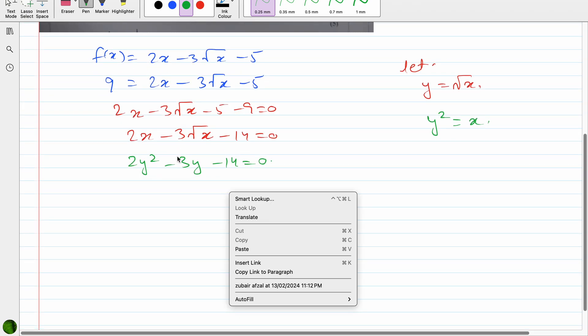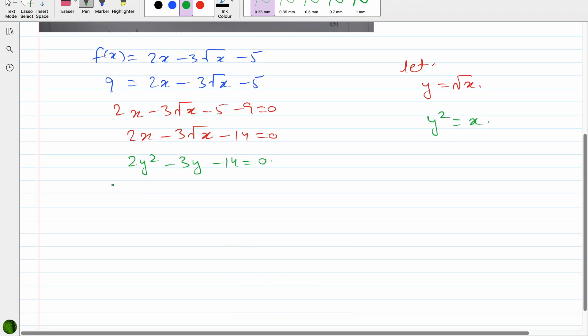Now this is 2 into 14 is 28. 2y² - 14, and what could be the factors of 28? 2, 14, 2, 7, 7, 1. So 7 and 4: -7y + 4y, when we add these two we get -3, multiplying these two we get -28.